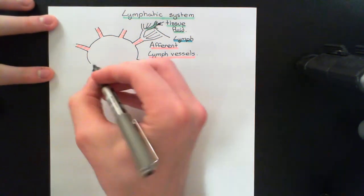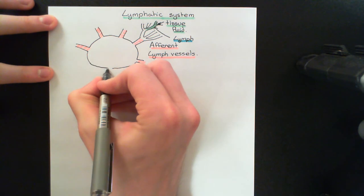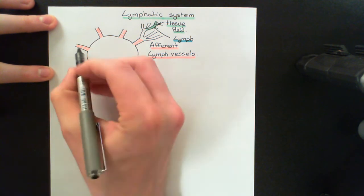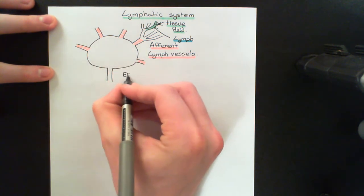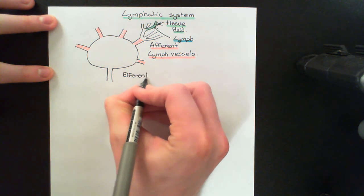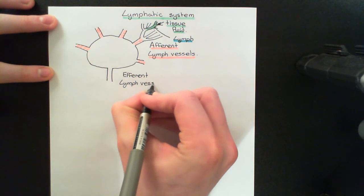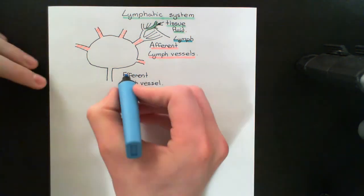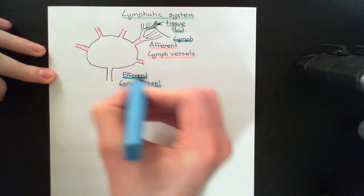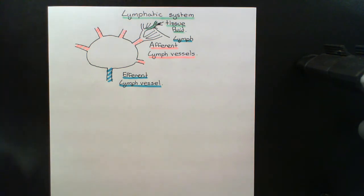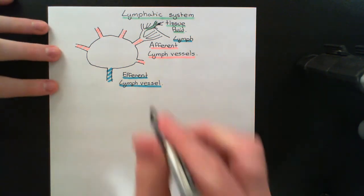Now let me show you the structure of the lymph node. There's also one lymphatic vessel that's coming out of the lymph node, draining it. So all of these afferent lymphatic vessels are draining into the lymph node, and there is one lymphatic vessel draining out, which is the efferent lymph vessel — efferent means coming out. Overall we have a huge number of afferent lymph vessels coming in draining their lymph into the lymph node, and then we've got one bigger lymph vessel coming out.